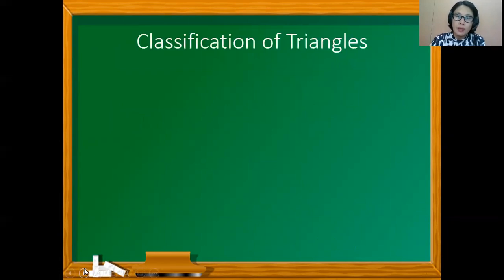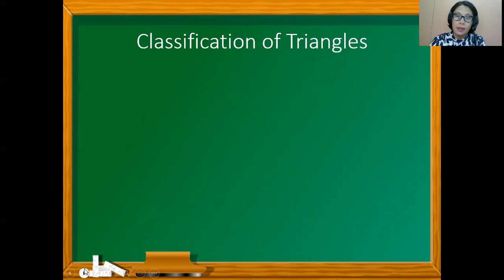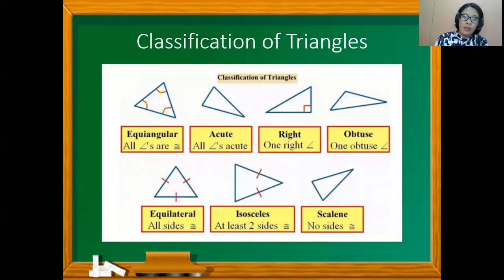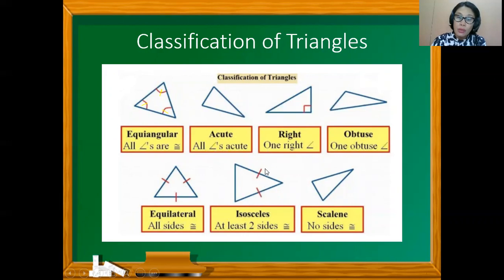We have the classification of triangles, which is necessary for our next topic. Equiangular: all angles are congruent. Acute: all angles are acute. Right triangle: there is one right angle. Obtuse triangle: there is one obtuse angle. Equilateral triangle: all sides are congruent. Isosceles triangle: two sides are congruent. Scalene triangle: no sides are congruent.